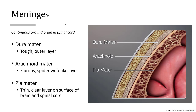The arachnoid mater is named for its structure that resembles spider webs. It is more fibrous, and the spaces within the scaffolding are where cerebrospinal fluid will flow. The last layer is just a slimy layer on the surface of the brain and spinal cord to protect it from direct contact with the surrounding fluid.